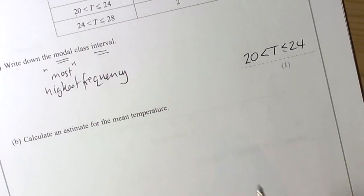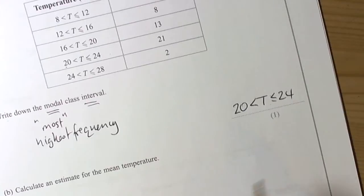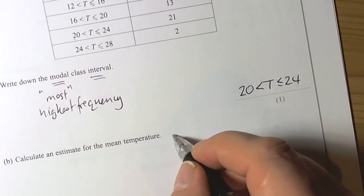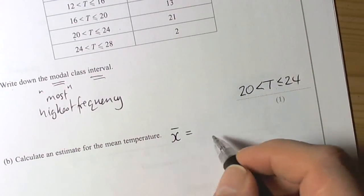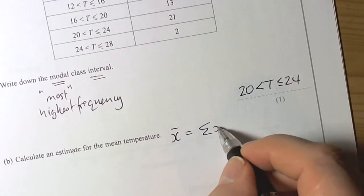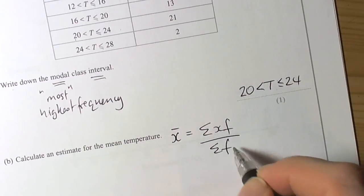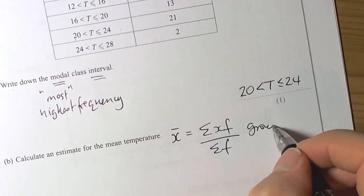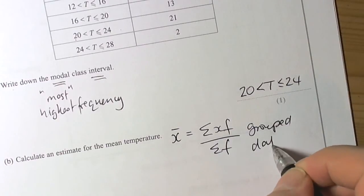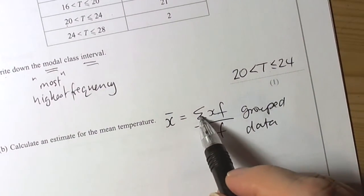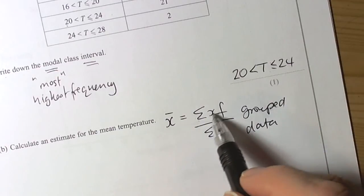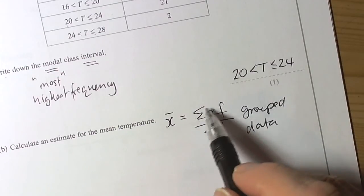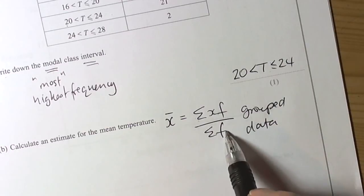The next part of the question says calculate an estimate for the mean temperature. Well again, we should remember formulas, so the mean is given as the sum of the xf's divided by the sum of the f's when we're dealing with grouped data. And the idea here is that the top of this fraction is going to calculate the total number of degrees C for all the days.